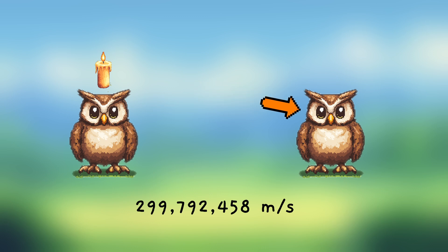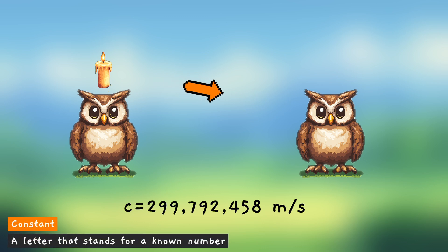And the letter that we use is C. And here we're using the letter C to stand for a number, but we do not call it a variable. We call it something different. We call it a constant. And this is because we know what the number is.